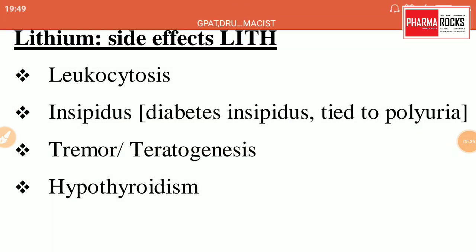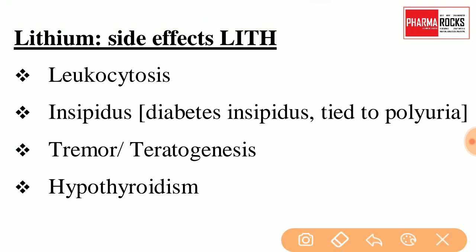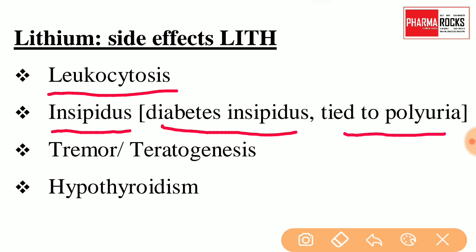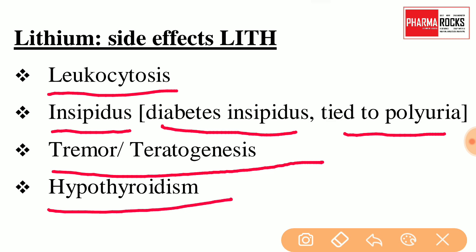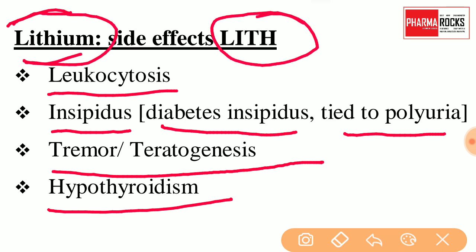For Lithium side effects, the short form you need to remember is 'LITH'. L stands for Leukocytosis, I stands for Diabetes Insipidus tied to Polyuria, T stands for Tremor and Teratogenesis, and H stands for Hypothyroidism. So 'LITH' helps you remember all the side effects of Lithium.